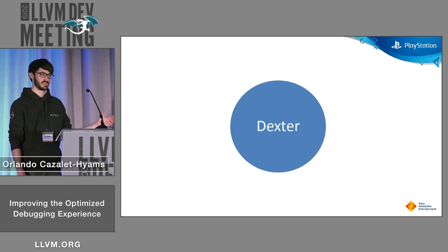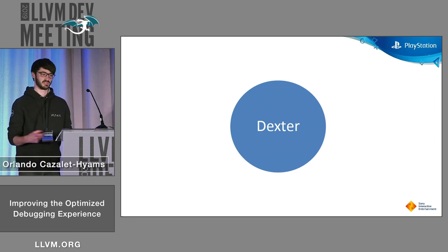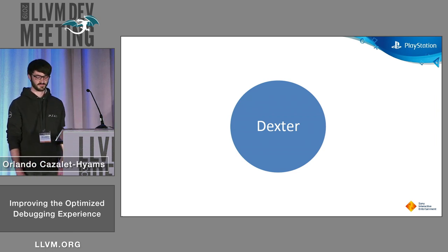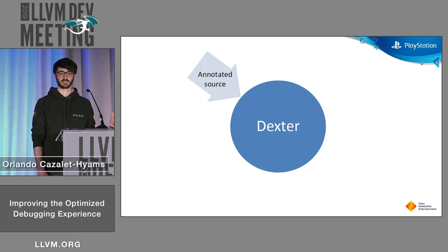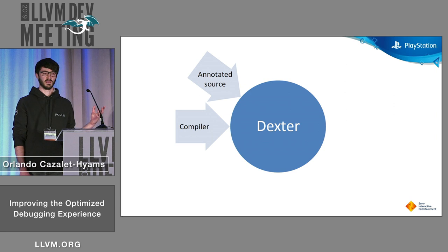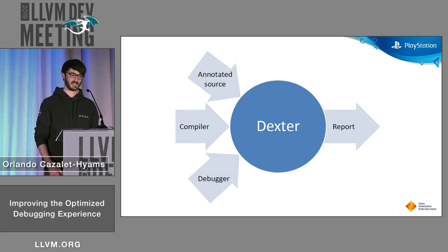We wrote a tool called Dexter, which we demoed at LLVM last year. I'm not going to go into details about how to use Dexter so much, but I'm going to give a quick overview of what it does. Dexter takes a source code test file annotated with user debugging expectations as comments, invokes a compiler, and drives the debugger with an automation API to produce a detailed report with a step-by-step debugging trace, and then a breakdown of what that trace means in terms of the originally encoded debugging expectations.